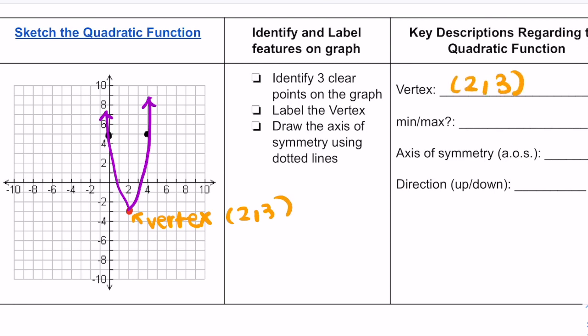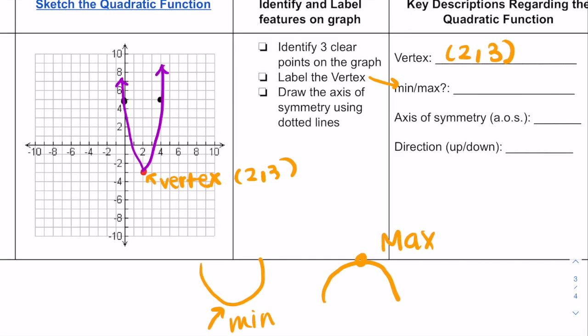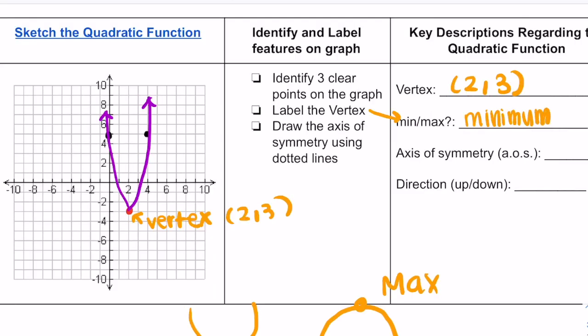Now the next question asks you: is it the min or the max? Remember, minimum is the smallest point, and because it's at the bottom, this will be considered min. The min is at the bottom of a U shape. The max will be the highest point and the shape goes down. So here this is my minimum. We just did two things at once. We labeled the vertex and we identified the point.